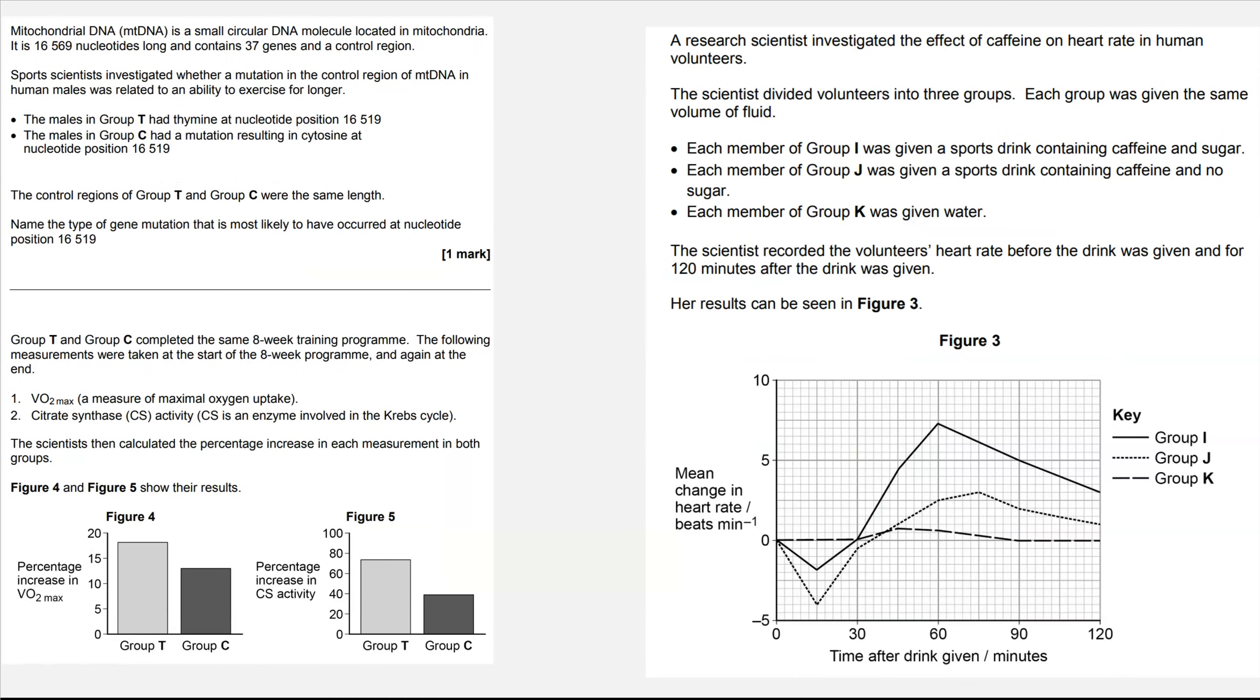So what we mean by this then, is when you get these questions like these two here. It always starts with some information, normally unknown but linked to one of the theory topics, and it tells you what the scientists are investigating. It gives you a bit of information about their method, and then it gives you their results. And we can see that over here as well, so the scientists are investigating the effects of caffeine on heart rate in human volunteers. We then have a bit about the method and the results. So that's how the critical analysis questions always start: what's been investigated, method and results.